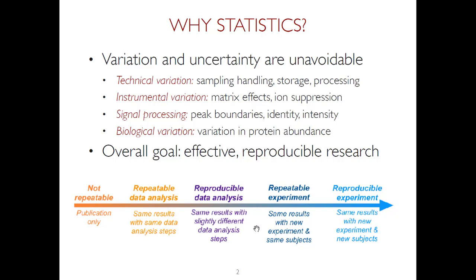We also want a repeatable experiment where we have the same samples and, when reanalyzed, we get the same answer even if not identical numeric values. The gold standard of reproducibility is a reproducible experiment itself — where we have new biological material, new individuals, apply the same or similar workflow, and get qualitatively the same answer. Statistical experimental design is key for this, because without attention to biases and sources of variation it's really not possible to even qualitatively reproduce the results.